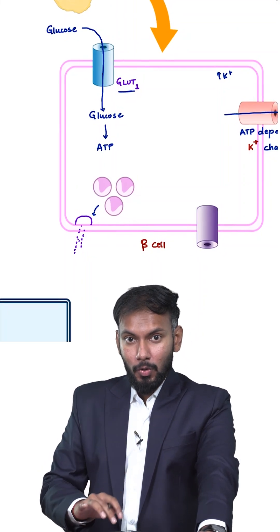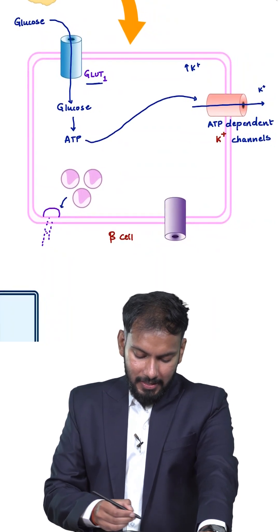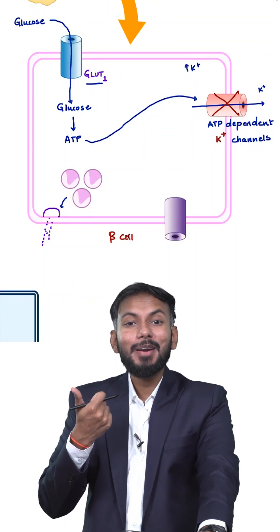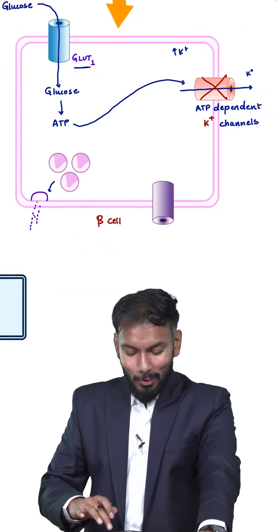Now what will this ATP do? This ATP will come and block this potassium channel. That is why these are known as ATP dependent potassium channels. When these ATP dependent potassium channels are blocked, what will happen?